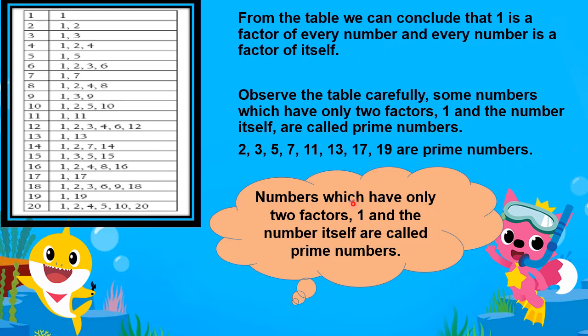Numbers which have only 2 factors — 1 and the number itself — are called prime numbers.